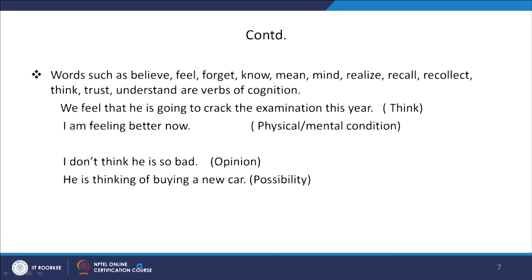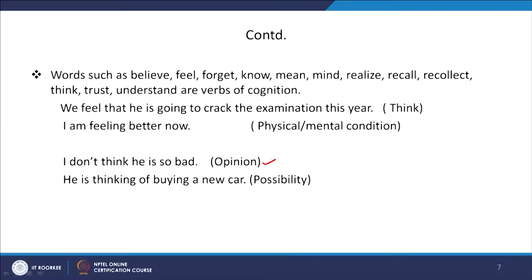The last category of troublesome verbs is verbs of cognition — words like 'believe,' 'forget,' 'know,' 'mean,' 'mind,' 'realize,' 'recollect,' 'recall.' When somebody says 'I do not think he is so bad,' you cannot say 'I am not thinking he is so bad.' But when there is a possibility you can say 'I am thinking of buying a new house.' When asked 'How do you feel?' the response will be 'I am feeling better' — but you should say 'How do you feel today?' not 'How are you feeling today?' These five categories — relational, possession, emotion, cognition, perception — must be kept in consideration.